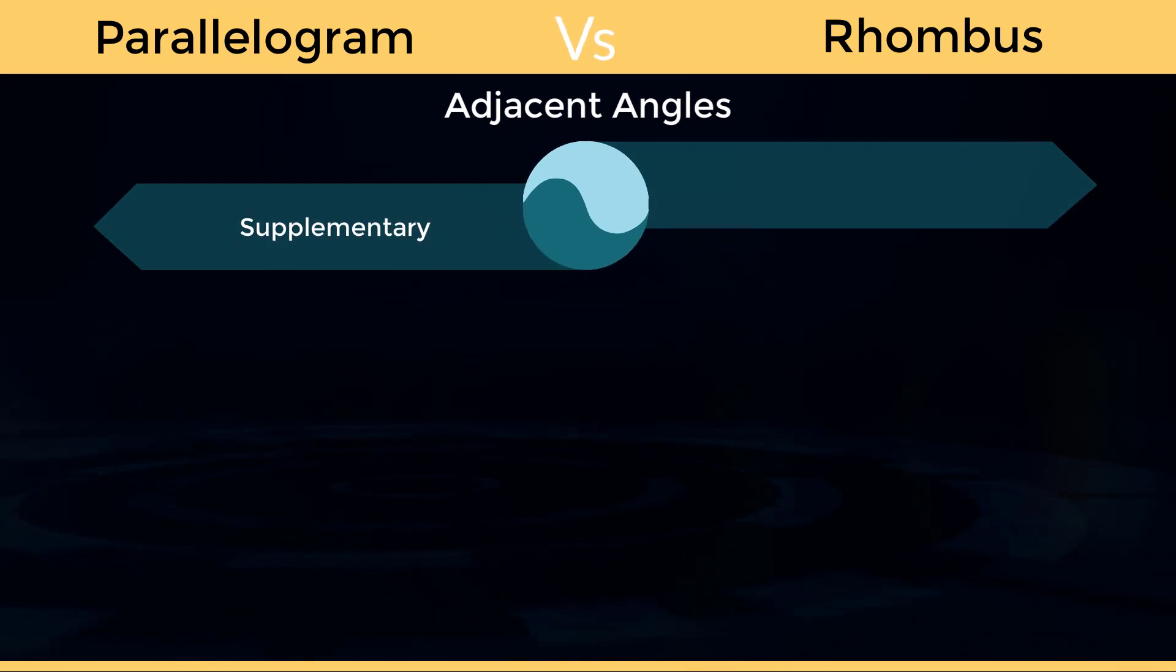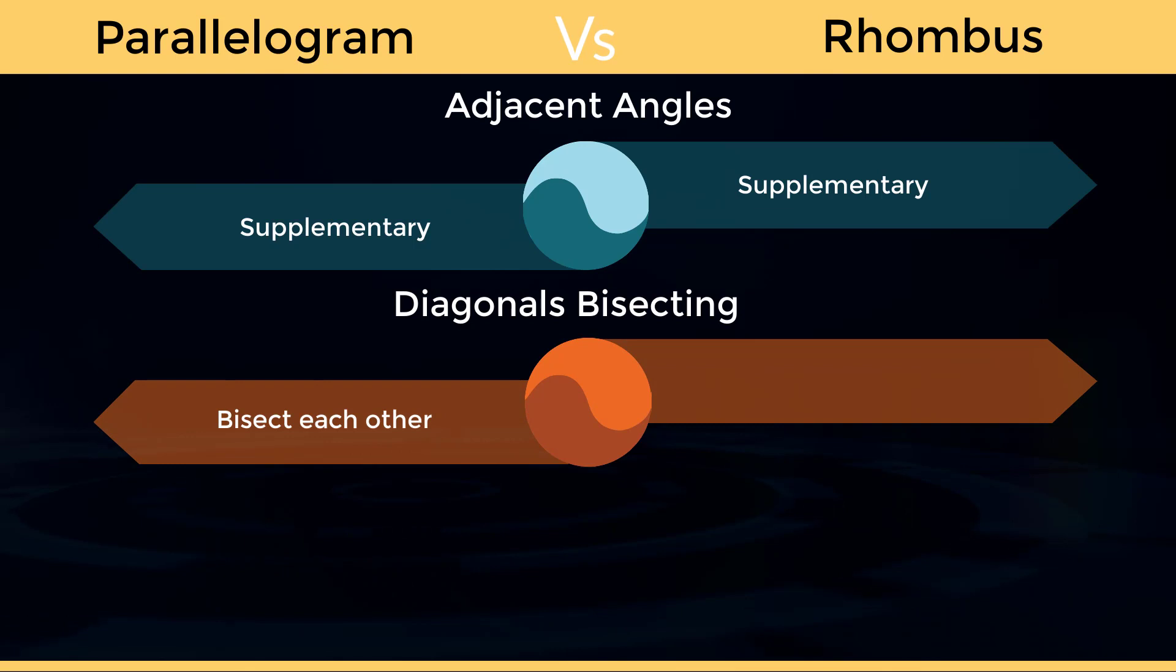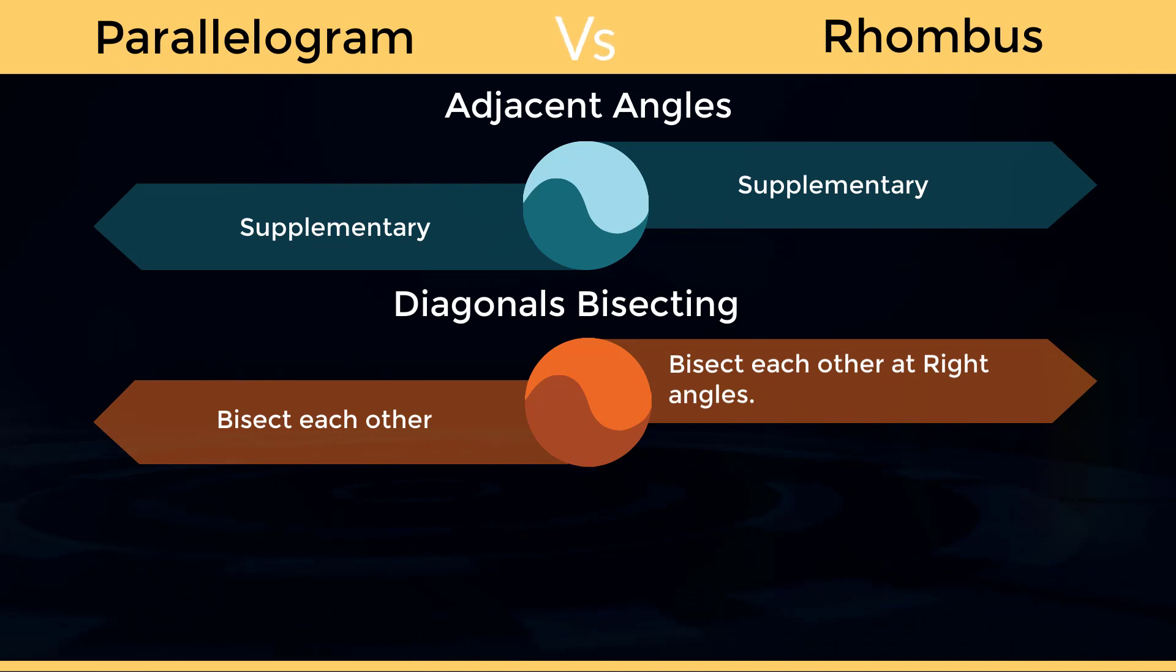Adjacent angles of parallelogram are supplementary. Adjacent angles of rhombus are supplementary. Diagonals bisecting parallelogram bisect each other. Diagonals bisecting rhombus bisect each other.